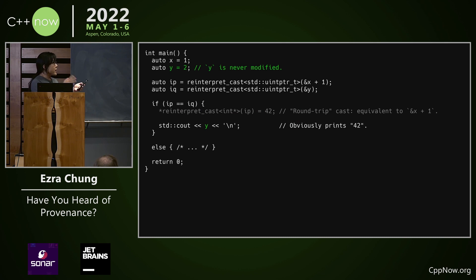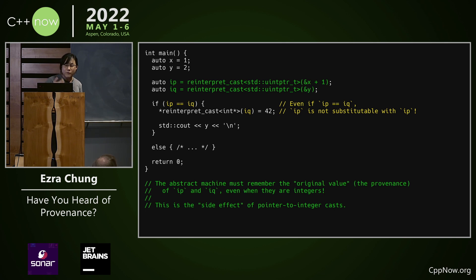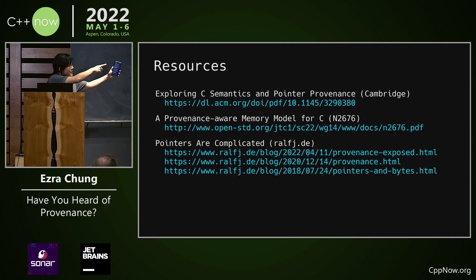Furthermore, now there are no references to the object y, so y is never modified, and so this program obviously prints 2. To prevent this contradiction, we have to conclude that even if IP is bytewise equality-comparable — memcmp-equal — to IQ, IP is still not substitutable with IQ, because the abstract machine must remember the original value, the provenance of IP and IQ, even when they are integers. This is the side effect of pointer-to-integer casts that ClangTidy was warning about. There are many more interesting examples I don't have time to cover, so if you are interested, please check out those resources. It is fascinating. Thank you very much.